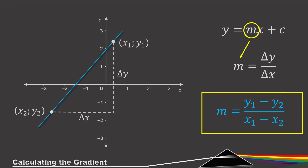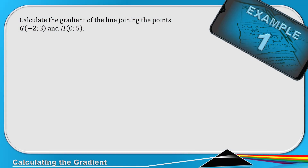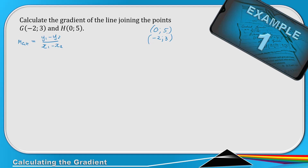Now let's apply the formula. Calculate the gradient of the line adjoining points G and H. When calculating a gradient, start by writing the formula first: gradient of GH = (y1 − y2) / (x1 − x2). It's good practice in analytic geometry to write the formula before substituting. I personally like to list my points underneath each other — (0, 5) and (−2, 3) — so I remember which I substituted first. I tell myself 'top minus bottom.'